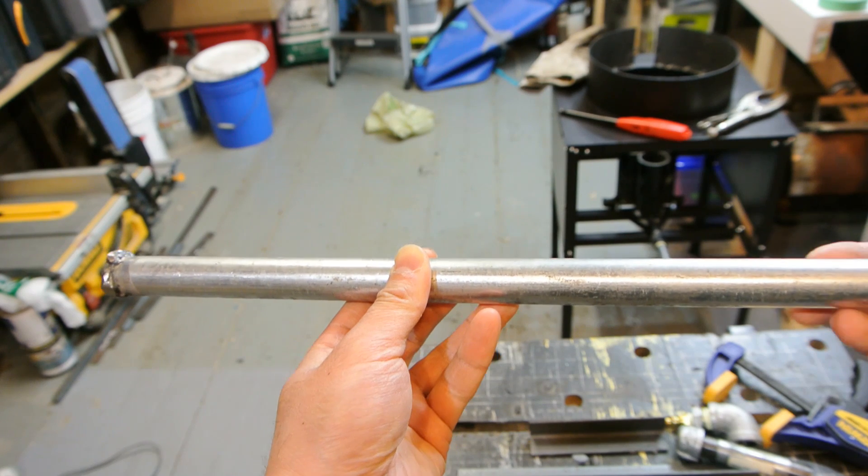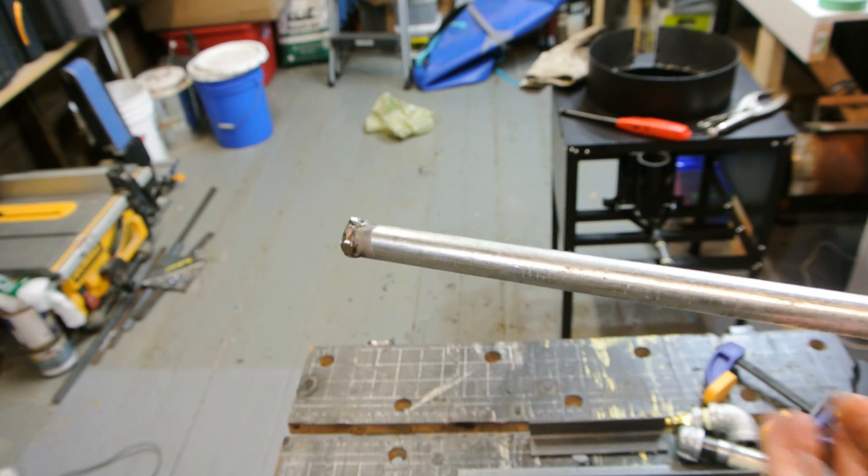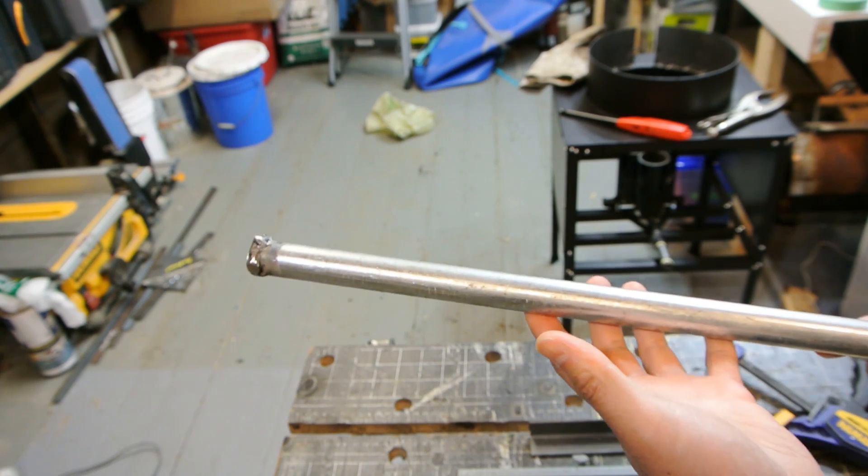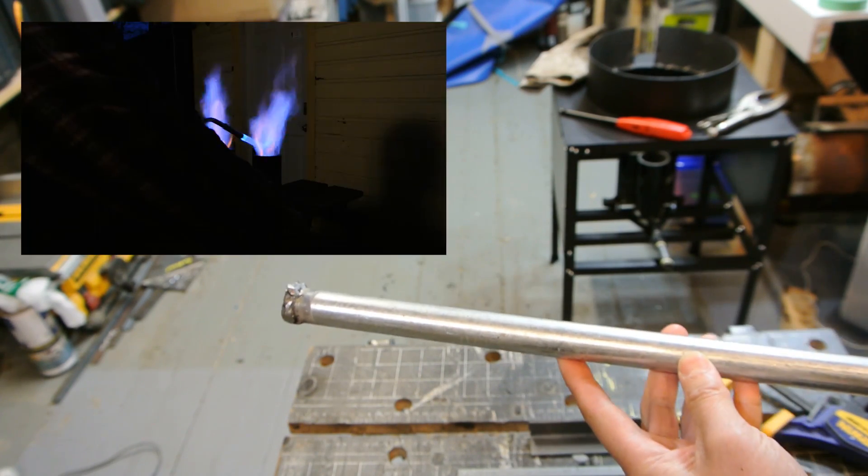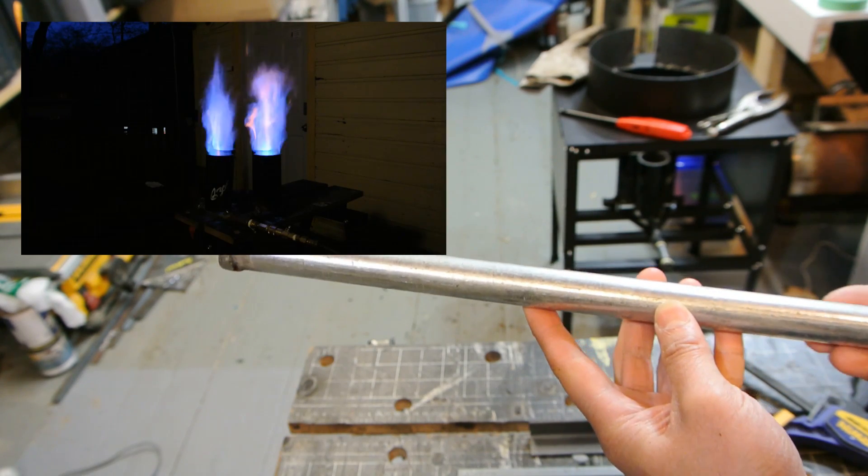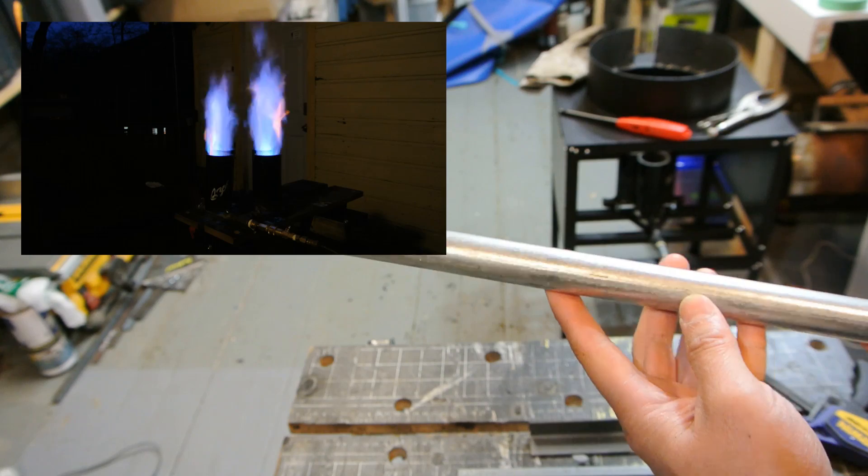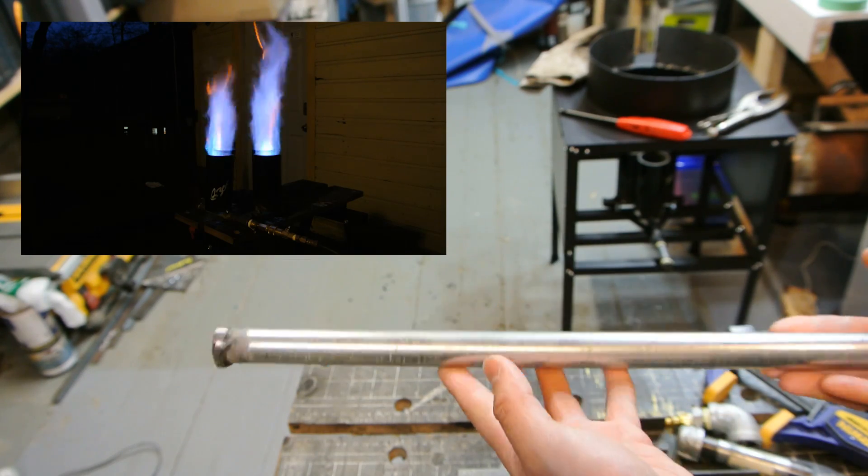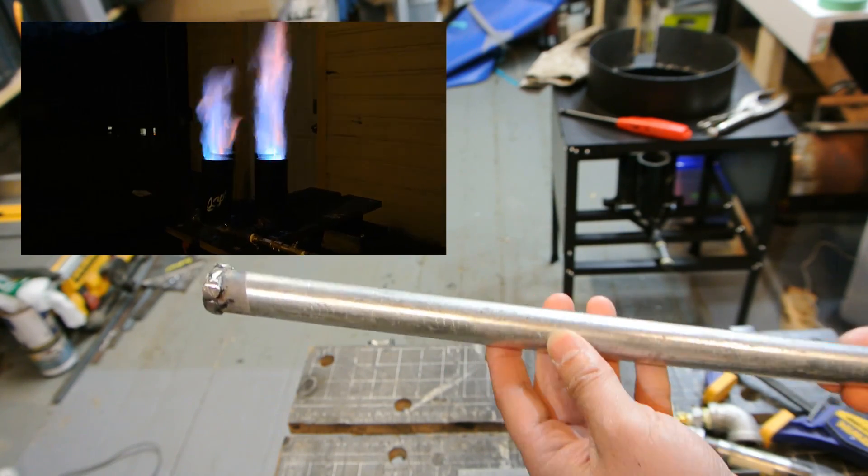Alright, so in this video I'm going to show you how to make a propane jet burner like this one here. This is a piece of galvanized pipe, but you can use just a piece of steel pipe.